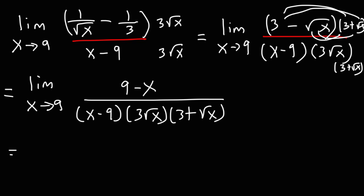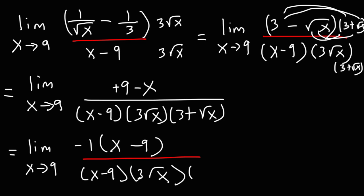Now what we're going to do is we're going to factor out a negative 1 from 9 minus x. If we take out negative 1, the negative x will become positive x, the positive 9 will become negative 9. So as you can see at this point, we can cancel x minus 9.